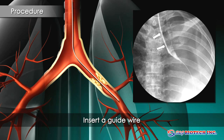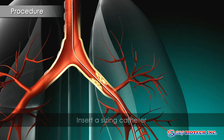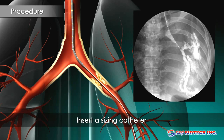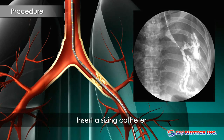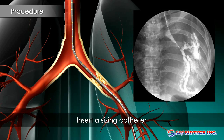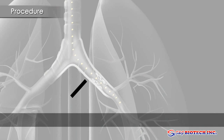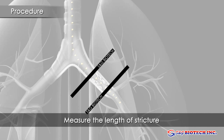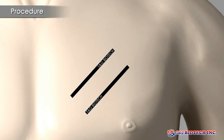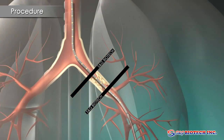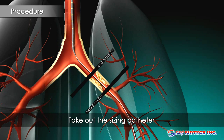Insert a guide wire. Insert a sizing catheter. Measure the length of the stricture accurately — for example, by using radio-opaque markers and rulers. Take out the sizing catheter.